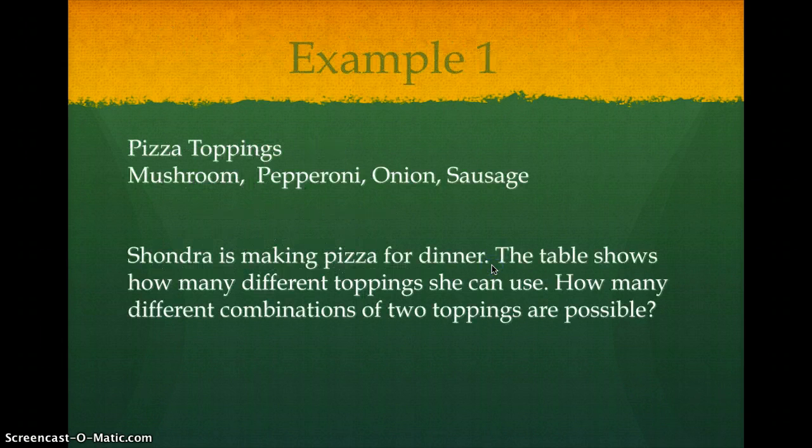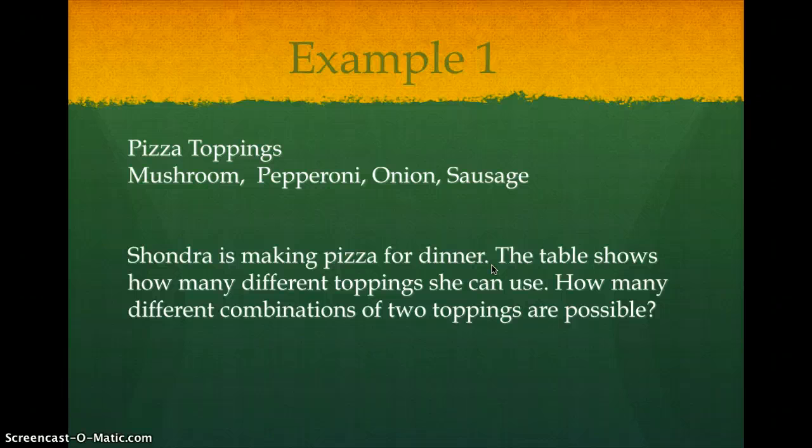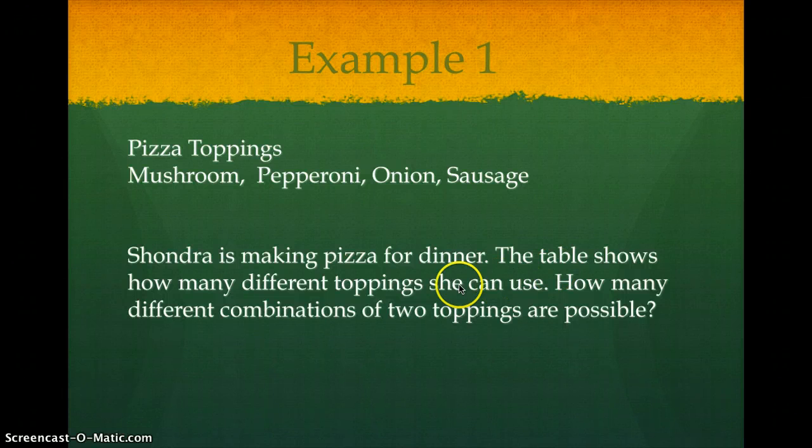Our first example has got four different pizza toppings: mushroom, pepperoni, onion, and sausage. Shondra is making pizza for dinner. The table shows how many different toppings she can use. How many different combinations of two toppings are possible?